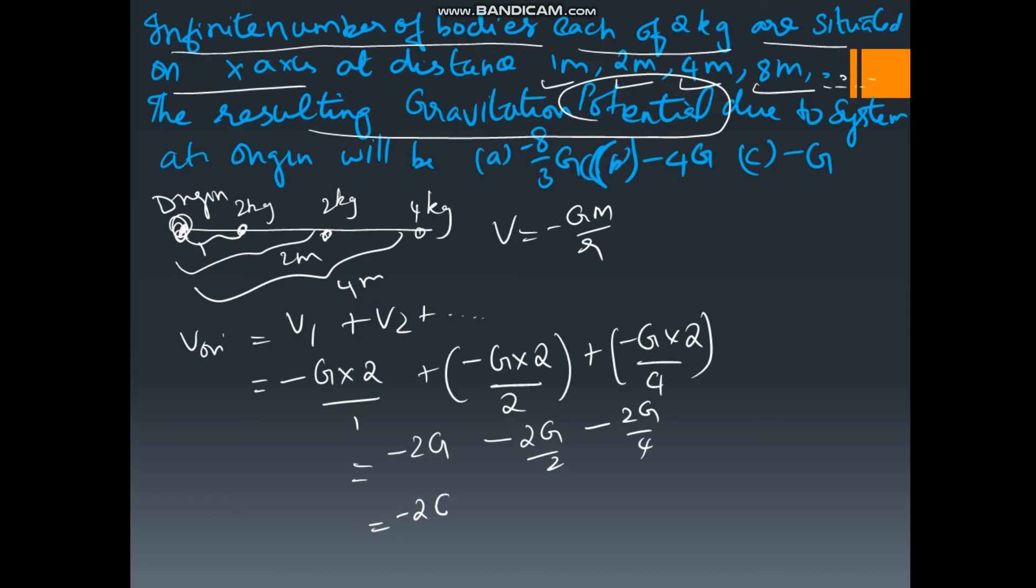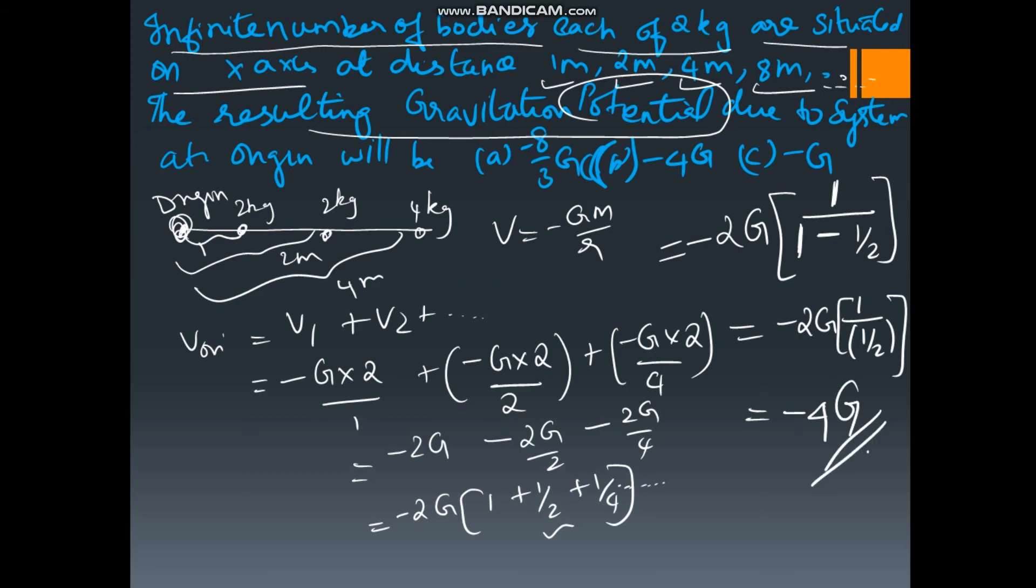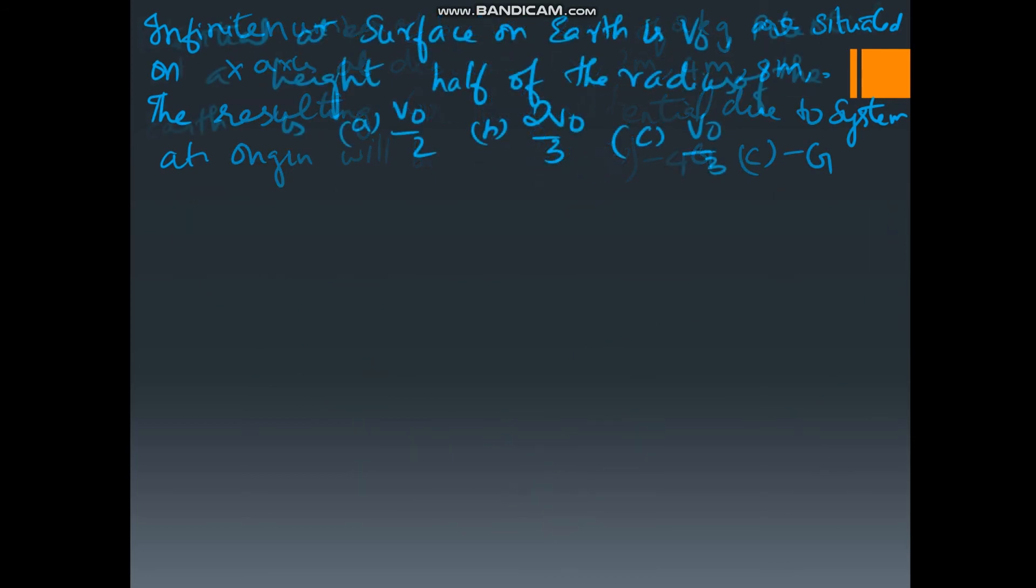So minus 2G minus 2G by 2 minus 2G by 4. I am taking minus 2G outside. So it is 1 plus 1 by 2 plus 1 by 4. So this you have learned in your 10th standard formula. If like this, it is coming, then simply, if you don't know also, and it goes on here. If it is coming like this, you just do what I'm doing. Minus 2G into first term 1 divided by first term minus the second term that is 1 by 2. So it comes out to minus 2G into 1 divided by 1 by 2, which is minus 4G. So the answer is B option, that is minus 4G.